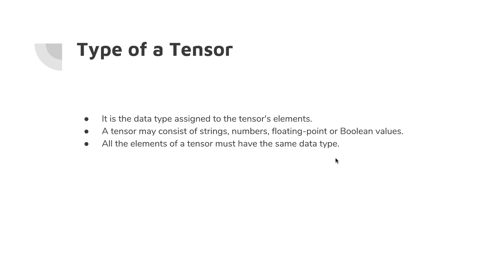Now let's see what the type of a tensor is. The type of a tensor is essentially the data type assigned to the tensor's elements. A tensor may consist of strings, numbers, or floating-point boolean values, but one thing to note carefully: all elements of a tensor must have the same data type. Having several different data types in the same tensor is invalid. In this video we learned what a tensor is and saw the parameters of a tensor: rank, shape, and type.